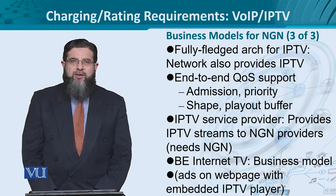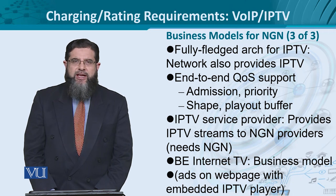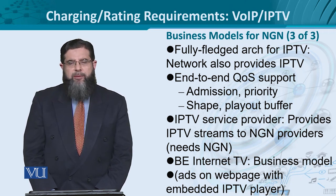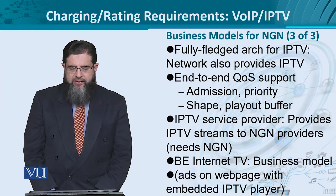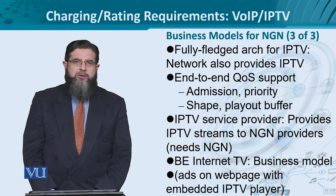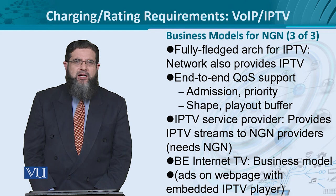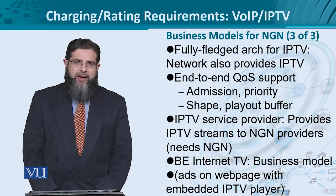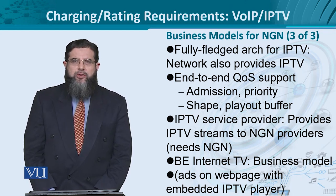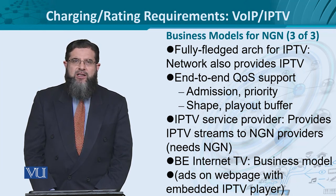Similar to VoIP, we could have a certain range of services in IP television. For instance, we can have a full-fledged architecture for IPTV where the network provider and the content provider are the same. In this case, the requirements of ensuring quality of service become end-to-end — from admission control, to providing priority-based service to NGN multimedia traffic, traffic shaping for competing resources, and on the receiver end, ensuring a smooth playback layout and meeting buffering requirements.